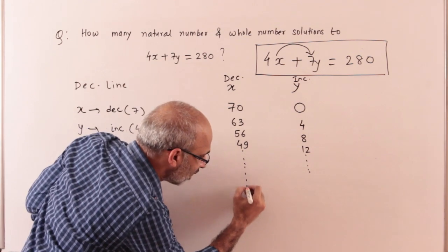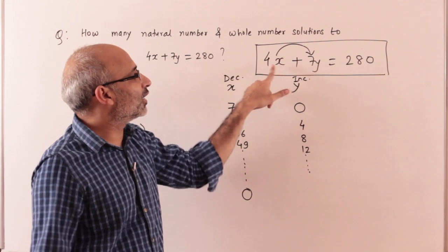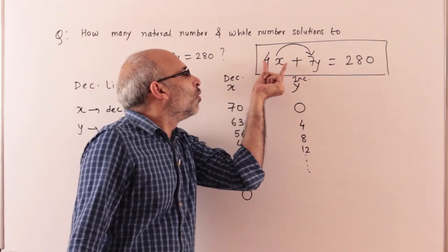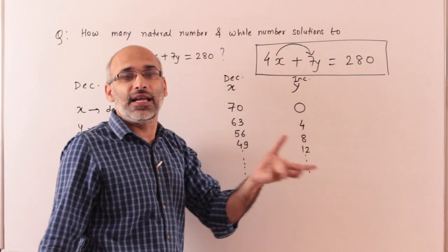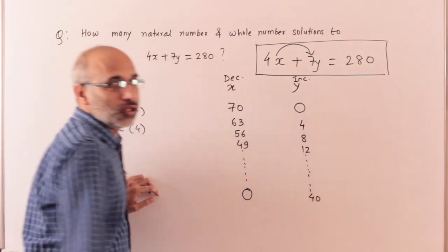If the value of x is 0, then the equation will be 0 plus 7y equals 280. That means y is 40. So this is the last solution.